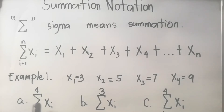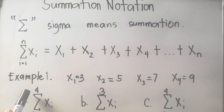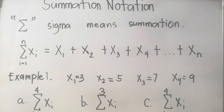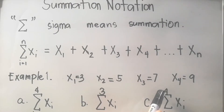Let us solve: (a) summation of x sub i where i equals 1, meaning we start at x sub 1 and end at x sub 4 since n equals 4. (b) Summation of x sub i where i equals 2, meaning we start at the second value and end at x sub 3 since n equals 3. (c) Summation of x sub i where i equals 3, so we start at x sub 3 and end at the fourth value since n equals 4.